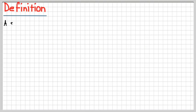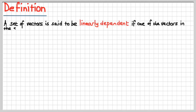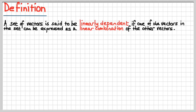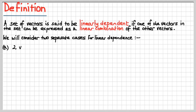Now, we need a definition of linear dependence. So we can say that a set of vectors is said to be linearly dependent if one of the vectors in the set can be expressed as a linear combination of the others in the set. Now, what does that mean? Look, don't worry, I'll show you. We're actually going to explore two separate cases.